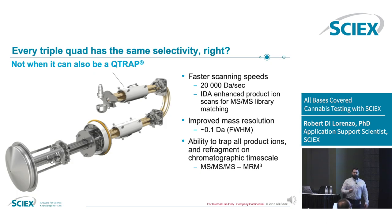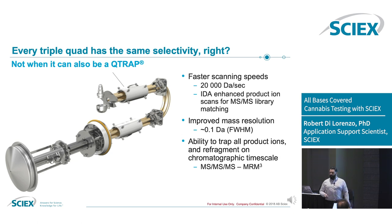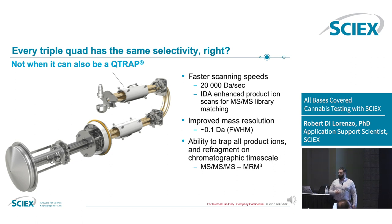You'd think it doesn't matter what instrument vendor you go with — you get a triple quad and it's going to have the same selectivity, MRMs are MRMs. But that's not true when your triple quad can be a trap. About 80% of our customers choose to have a Q-Trap as their Q3 — the Q-Trap model of our nominal mass systems.